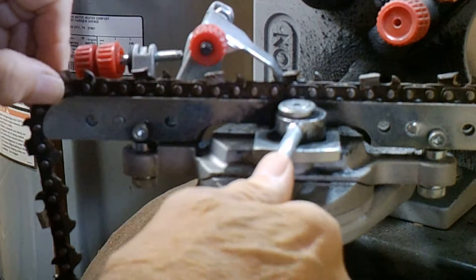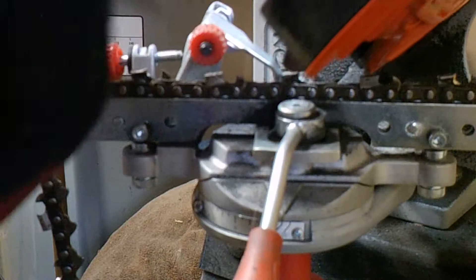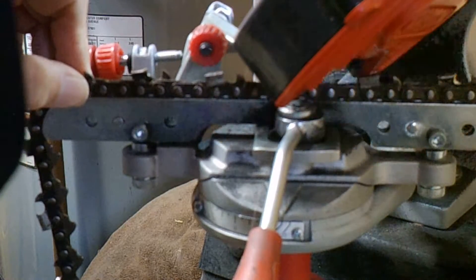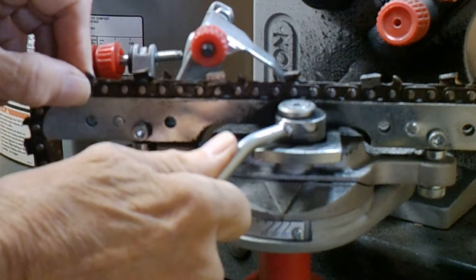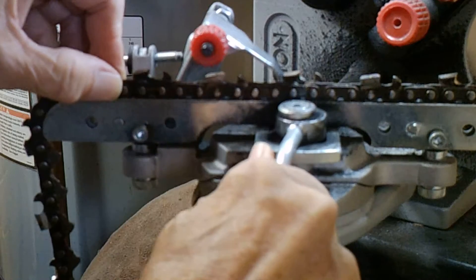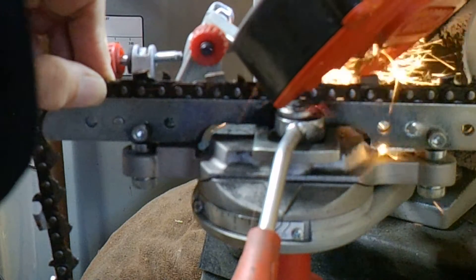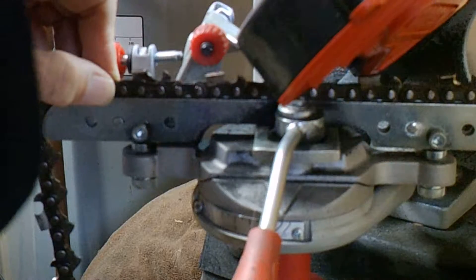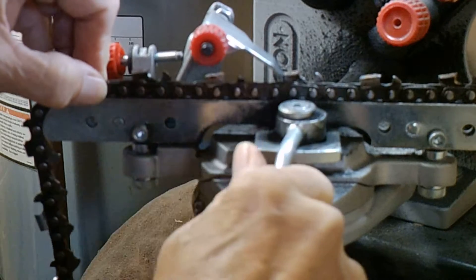This tooth was out of angle. Whoever sharpened it last time didn't do a good job on it. This is on a used saw that I bought. These teeth are sharpened incorrectly. I think they have a 35-degree angle on it, I'm not sure. Now we're getting to it. Like I said, it takes some time, but once you do it several times you get the hang of it. You can go through it pretty quick.